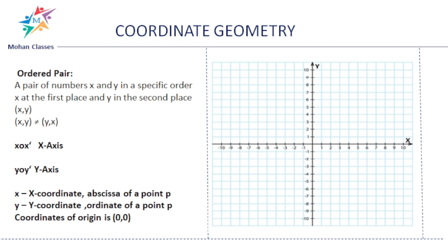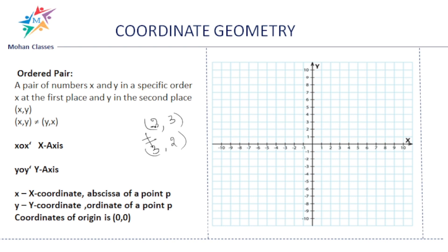A pair of numbers x and y in a specific order — x in the first place and y in the second place — represents a point. The x-axis value comes first and the y-axis value second. Now, is (2, 3) equal to (3, 2)? No, they are not equal. The coordinates (x, y) are not equal to (y, x); they are entirely different. We call this an ordered pair — ordered because the first value represents the x-axis and the second represents the y-axis.